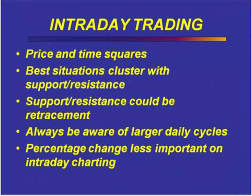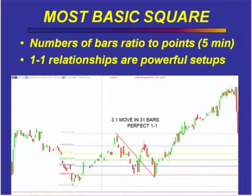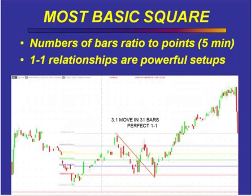This can even be applied to intraday trading. We use price and time squares. The best situations do cluster with support and resistance. You should always be aware of the larger daily cycles. Percentage change readings are less important on intraday charts. Now let's take this Russell 2000 e-mini move. This is a 15-minute chart. You have your common ABC down that everybody knows. But where do you get the conviction? Because you had a 3.1 point move in exactly 31 bars — a perfect one-to-one relationship.